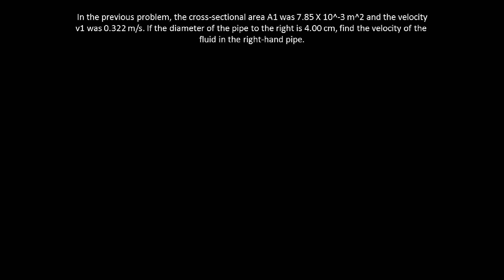So let's now solve this problem. And in here we're going to apply the equation of continuity. In the previous problem, the cross-sectional area A₁ was 7.85 × 10⁻³ meters squared and the velocity was 0.322 meters per second. If the diameter of the pipe to the right is 4 centimeters, find the velocity of the fluid in the right-hand pipe.